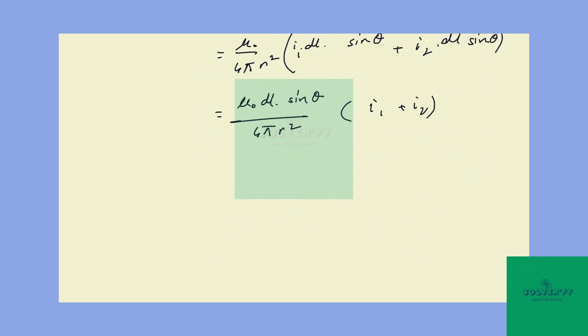Now we simply plug in the values. Mu naught by 4π is 10 to the power of negative 7. dL is a small differential length which is 1.5 millimeters times 10 to the power of minus 3 times sine theta.